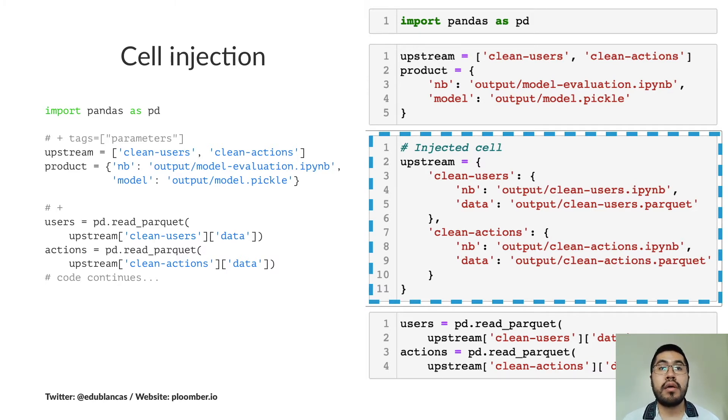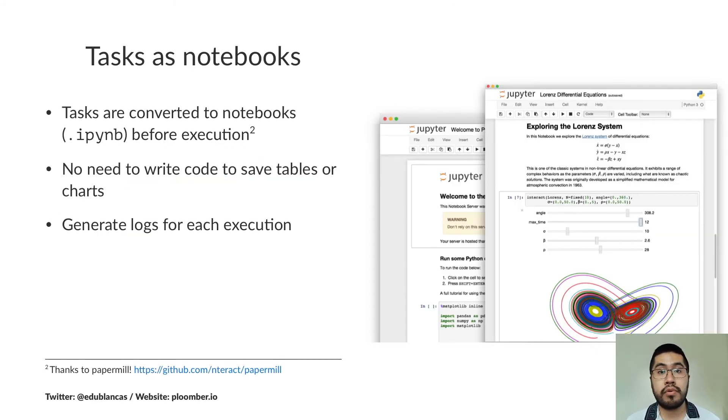And if the user interface looks familiar, you are right. That's a Jupyter notebook. It's because Plumber converts every script into a notebook before it gets executed. And the reason is that this allows us to leverage the IPyNB format so that we don't have to worry about saving tables or charts in different files because we can embed the content in a single file. This is very useful because we can, for example, compare versions of pipelines. We can compare the output of the pipeline from the week before to the code that we have right now, and we can quickly get the difference by just taking a look at the output from the notebooks.